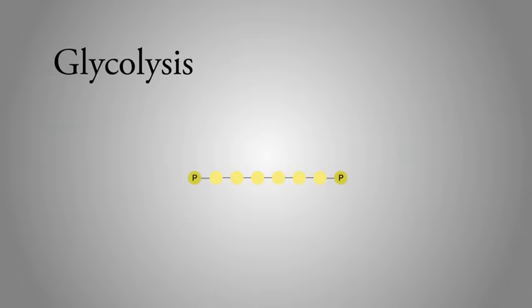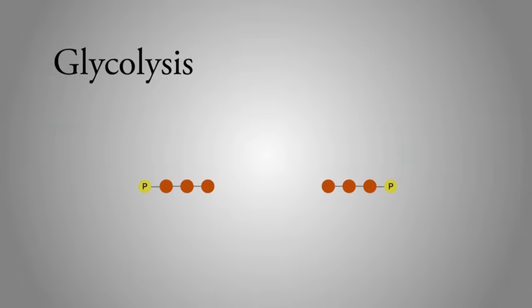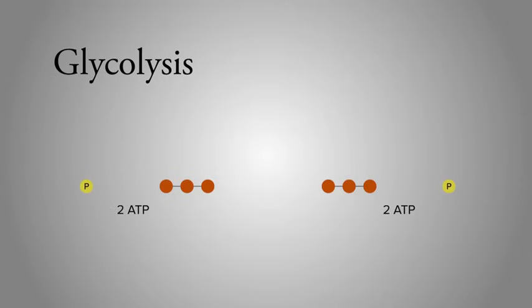Glucose is broken into two three-carbon molecules containing phosphate groups that were donated by ATP molecules. Next, the phosphate group is removed from the three-carbon molecules in a chemical reaction chain that produces two ATP from each molecule.